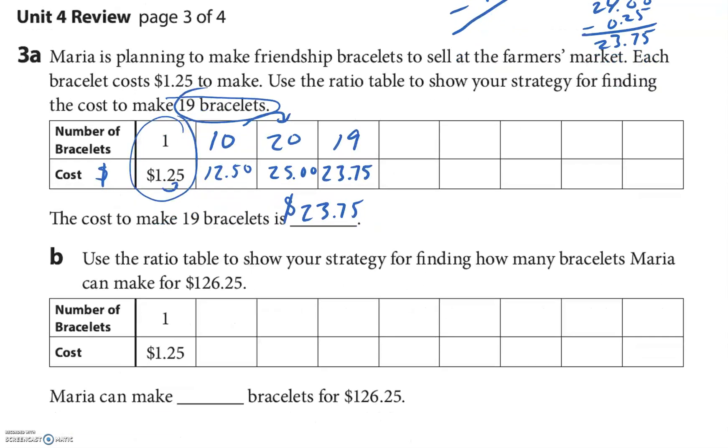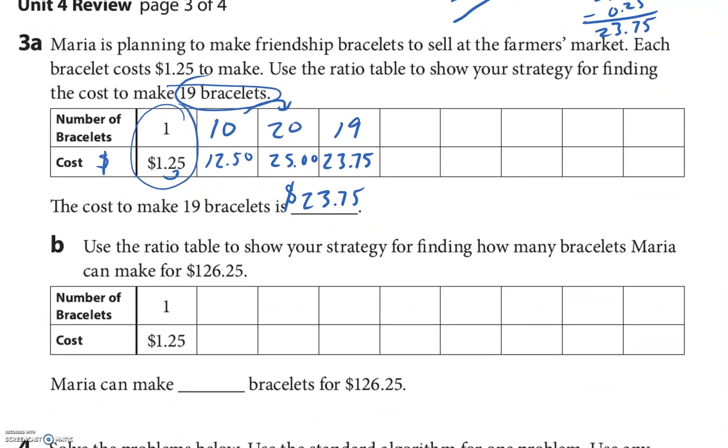They want to know how many bracelets she could make if she had $126.25. So we know 10 was $12.50, right? Pretty neat to copy that one out again.